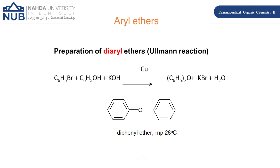To prepare diaryl ethers, we use the Ullmann reaction. An aryl halide such as bromobenzene is reacted with phenol in the presence of KOH and copper as a catalyst, yielding diphenyl ether along with KBr and water.